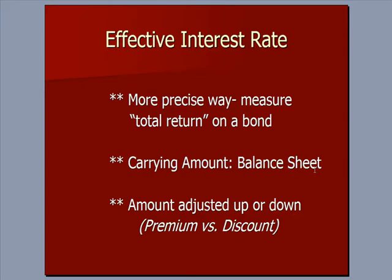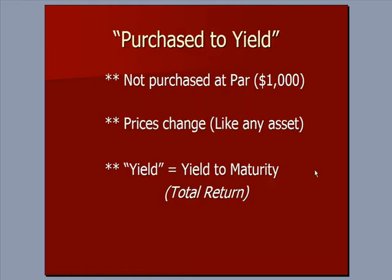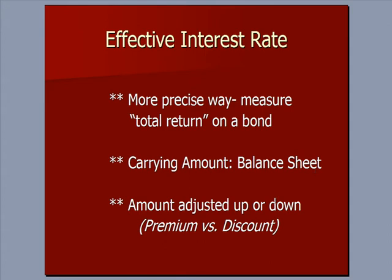In order to calculate that total return, a more precise way of doing it is called the effective interest rate. A new term we're going to bring up is called carrying amount, which refers to the dollar value of the bond on the balance sheet of the investor. That carrying amount is going to be adjusted up or down depending on whether you bought the bond at a premium or a discount.